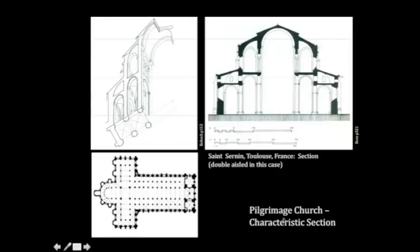Here's a section through Saint-Sernin. Even though this is a large church, it still has most of the elements we expect to see in the section of a Romanesque pilgrimage church: barrel vault, galleries up above where monks can circulate, and these stout piers that support the whole thing.